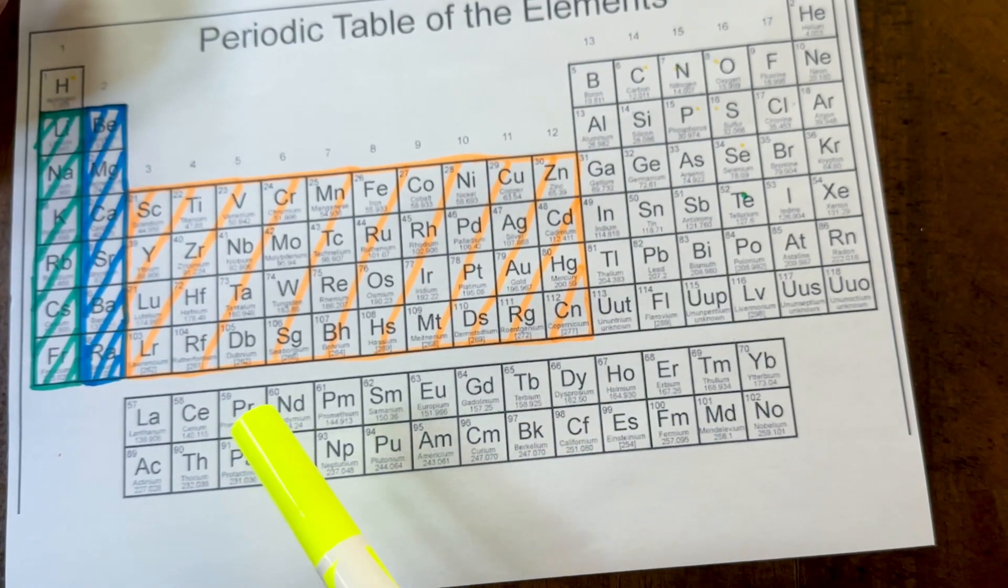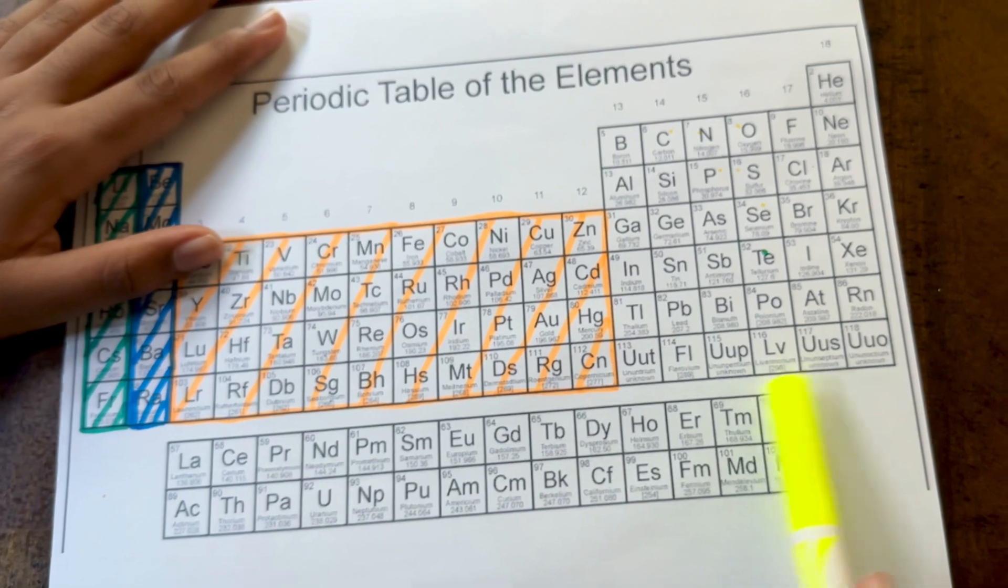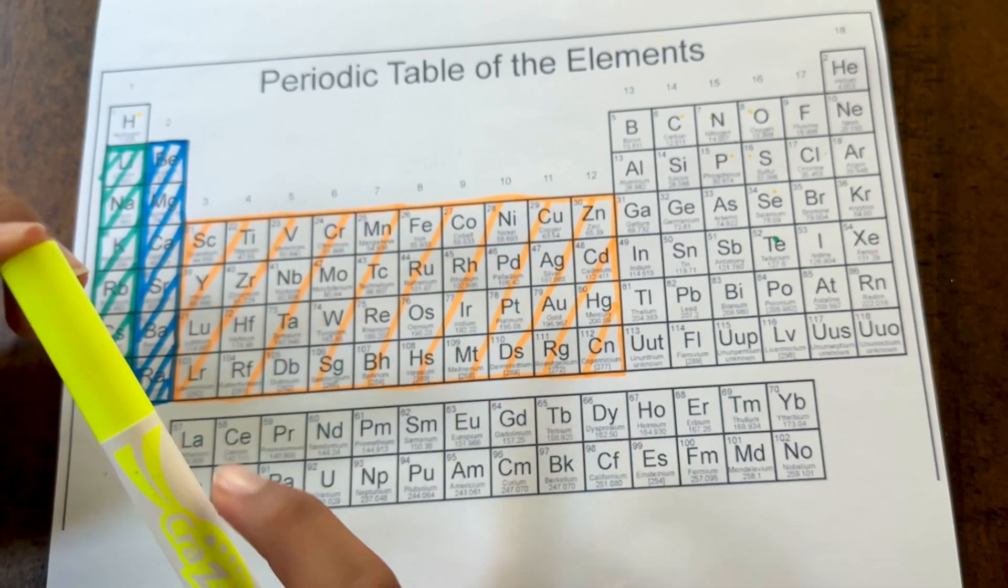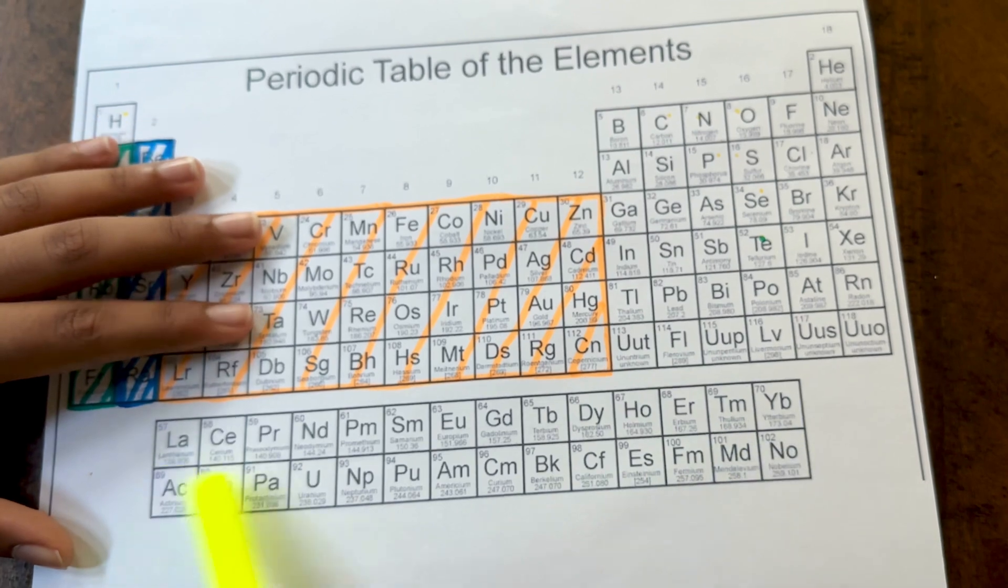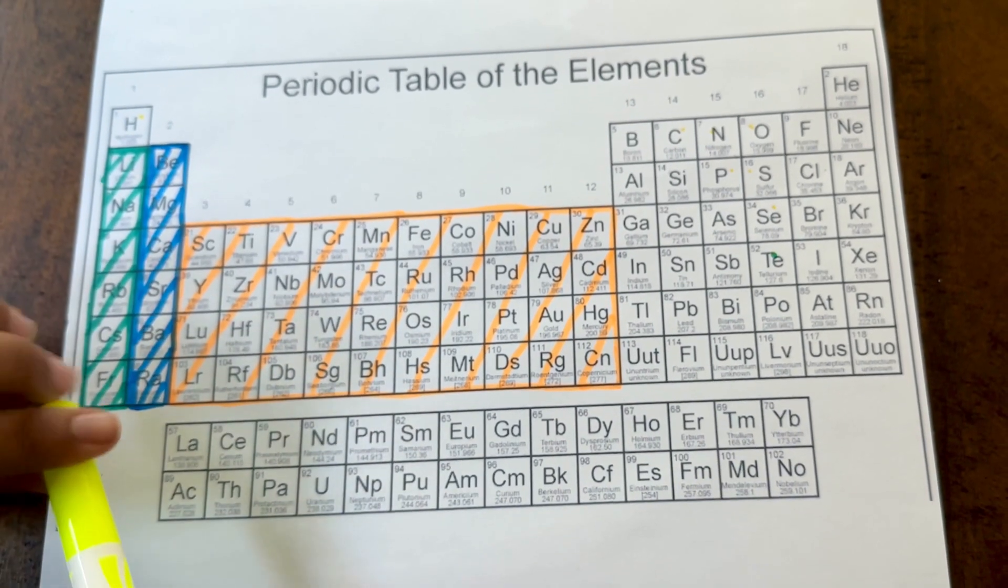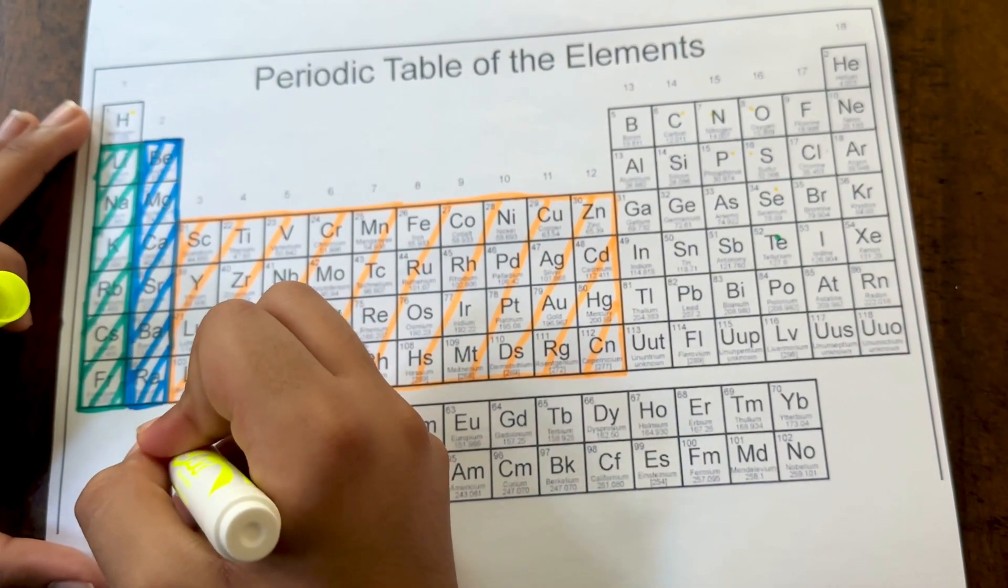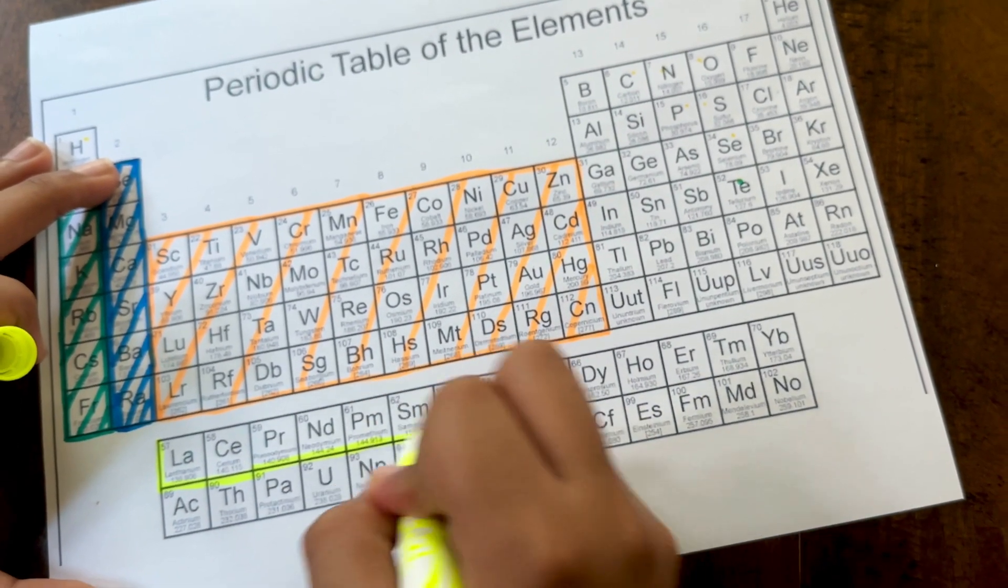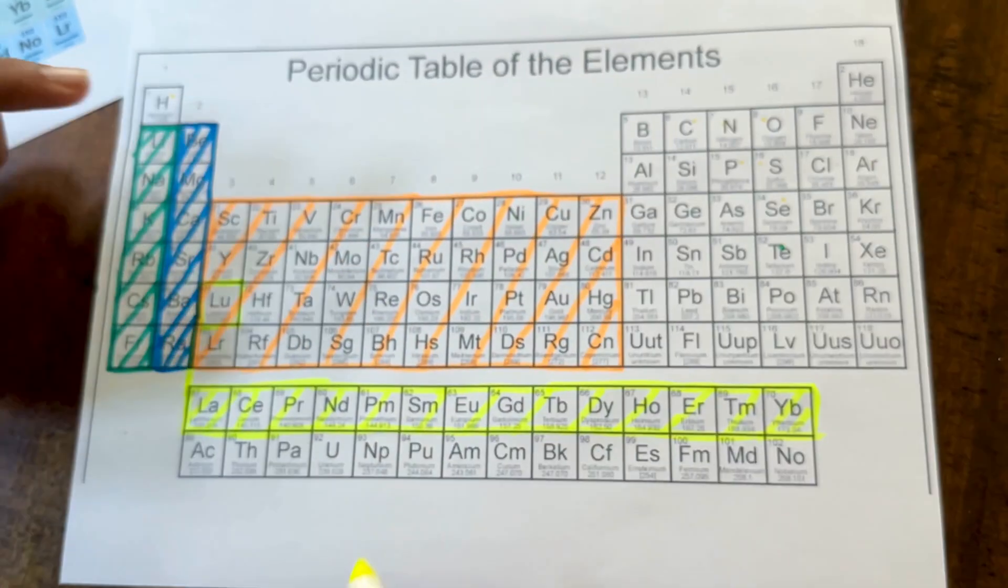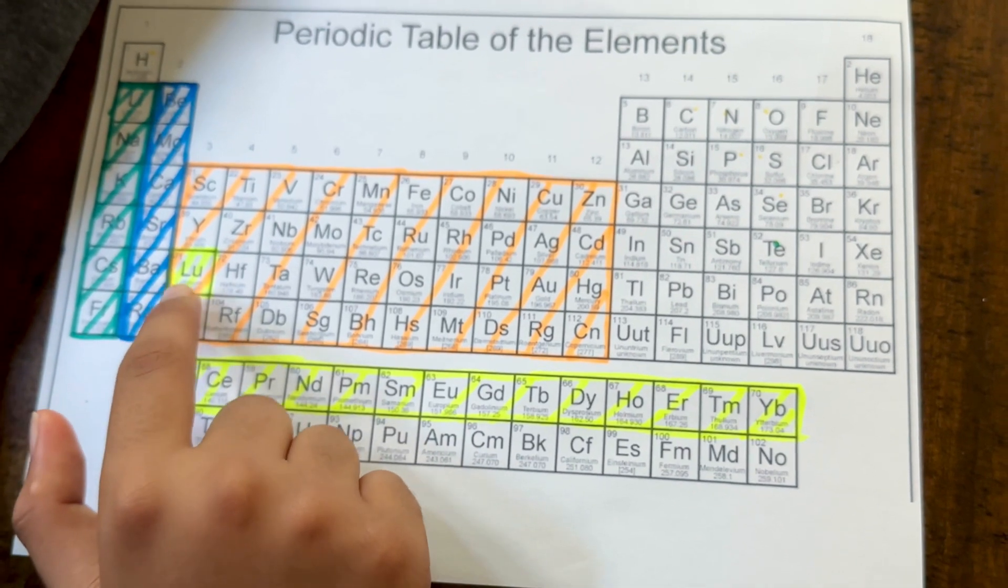Next, we're going to move on to lanthanides and actinides. Lanthanides, which are located in this top part, are not radioactive. But the actinides located at the bottom half are very radioactive. I'm going to highlight the lanthanides. These are not radioactive. This is where the lanthanide section starts.